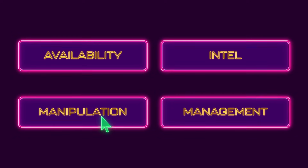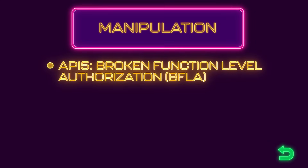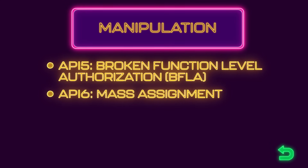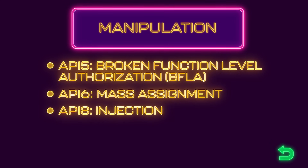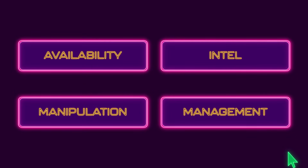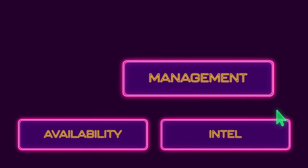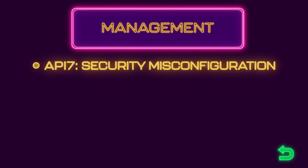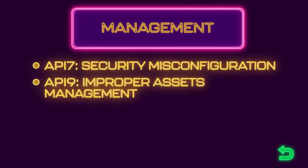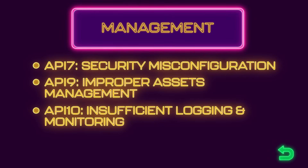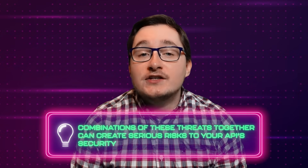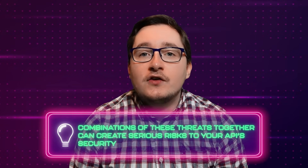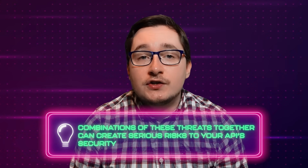In the Manipulation category, we have API number five: Broken Function Level Authorization; API number six: Mass Assignment; and API number eight: Injection. In the Management category, we have API number seven: Security Configuration; API number nine: Improper Assets Management; and API number ten: Insufficient Logging and Monitoring. Each of these can be exploited individually, but more complex combinations of these threats together can create serious risks to your API security.